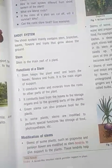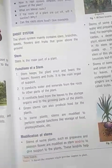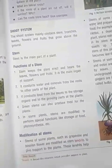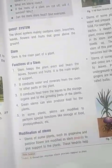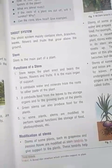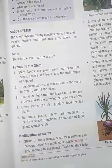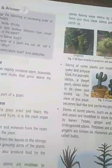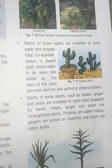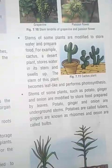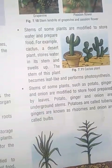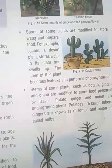Tendrils capture other structures to help the plant stand upright. Some plants are modified to store water. For example, cactus and desert plants store water in their stems. The stems of these plants become thick and also perform photosynthesis.